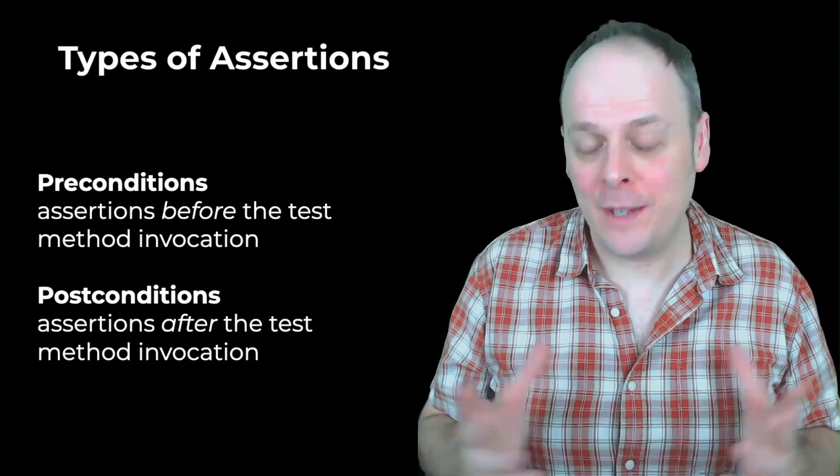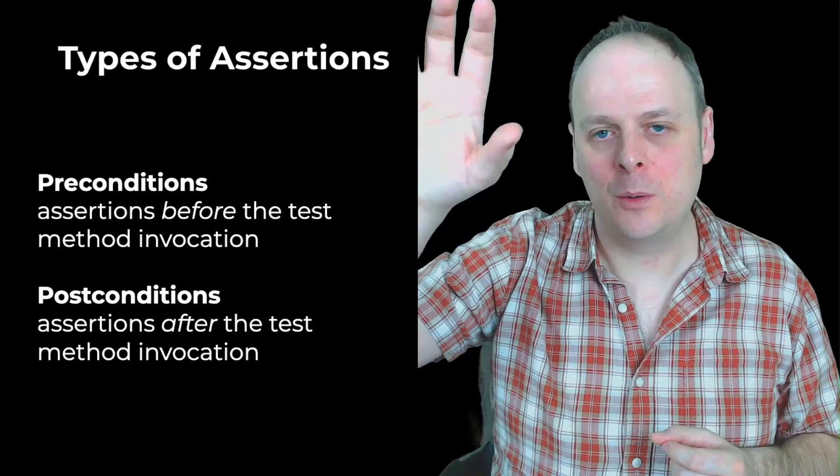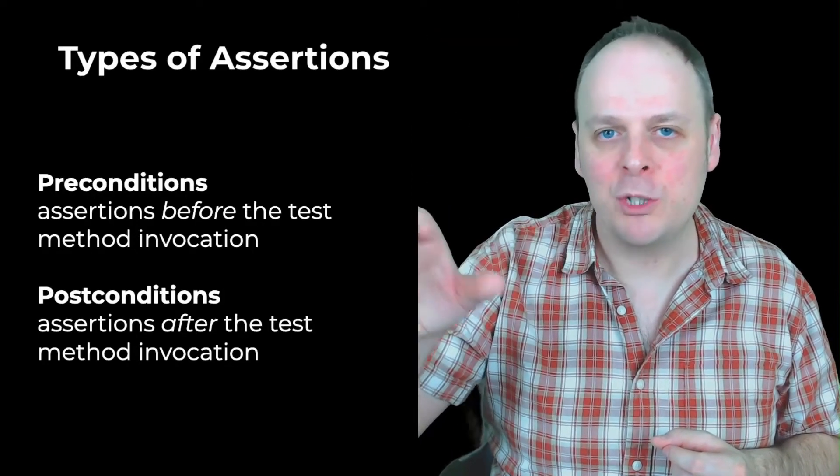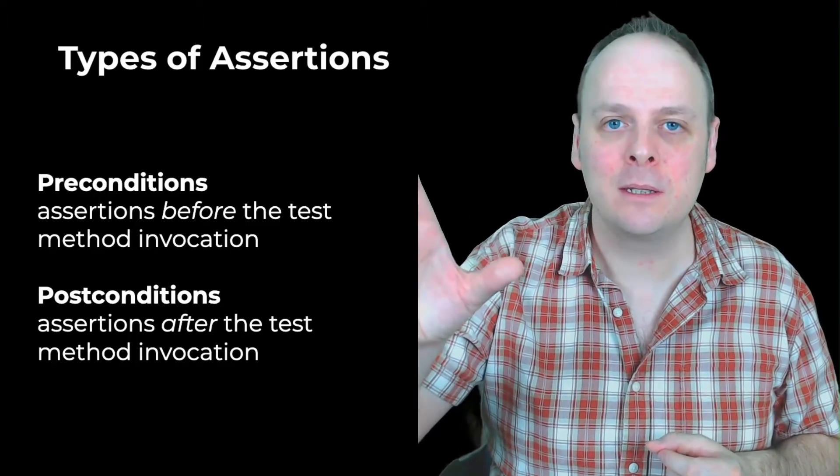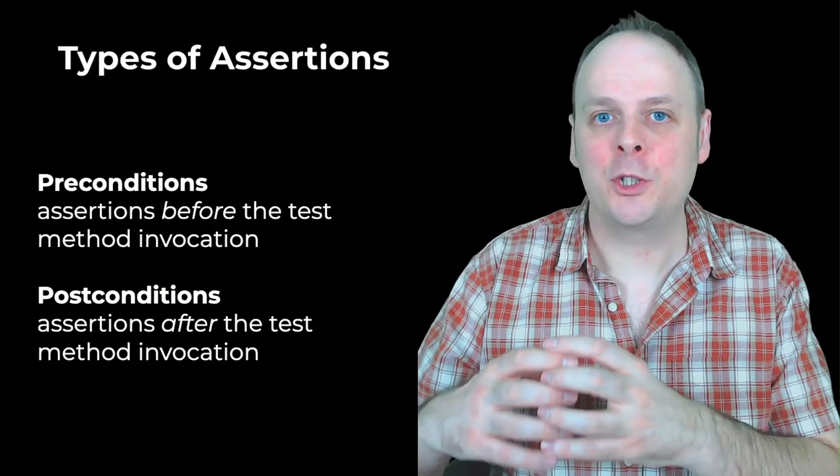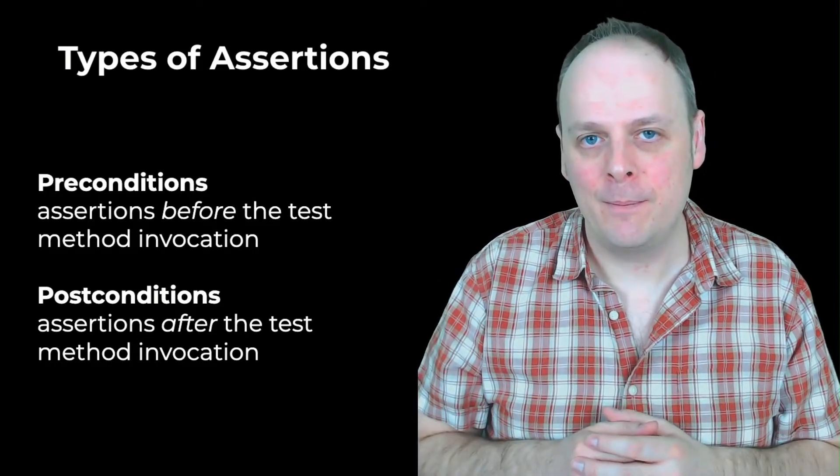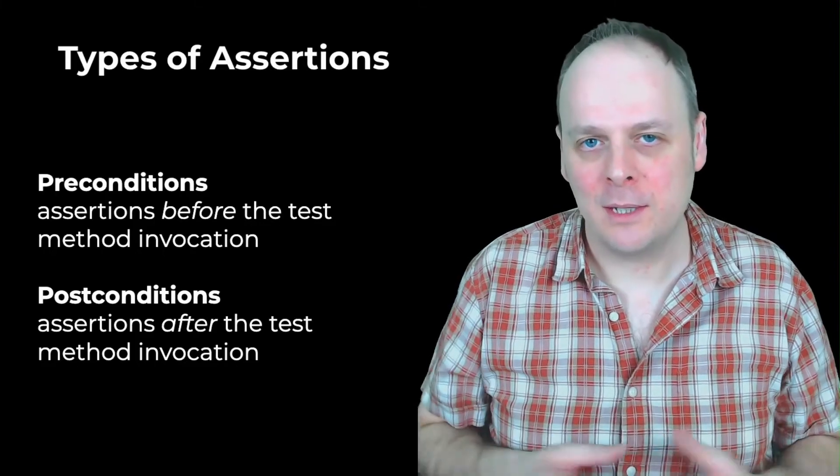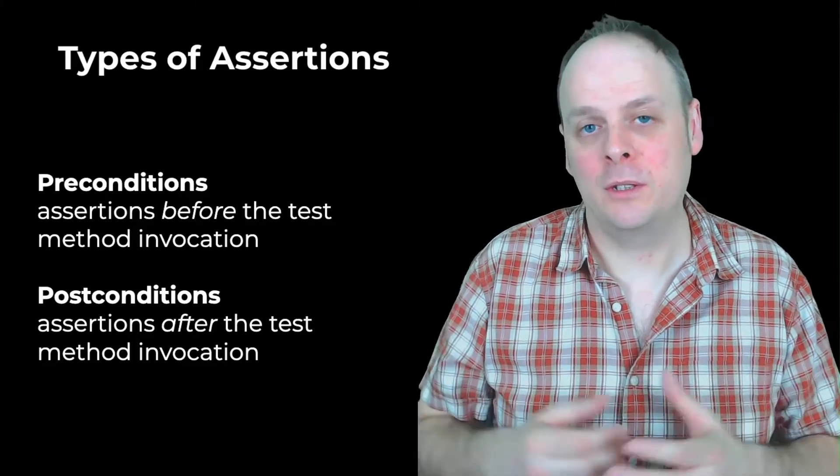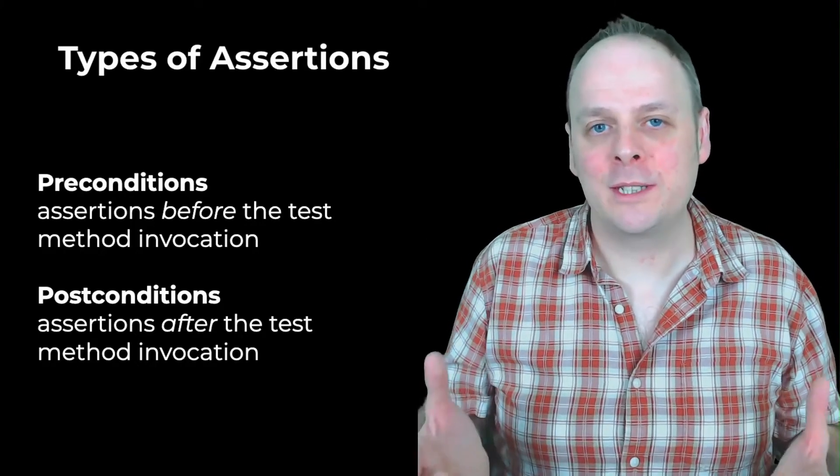Postconditions are usually the main category of assertions we think about when we're writing unit tests. In general, you do some setup to prepare for the test, then you invoke the method that's being tested, and then afterwards there's an assertions block where you basically make assertions about what you expect to be true. That's typically the format of most unit tests. The category of assertions you're going to come across are postconditions.